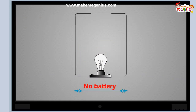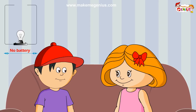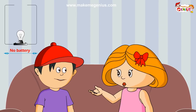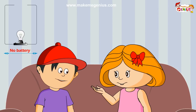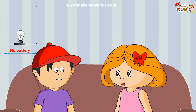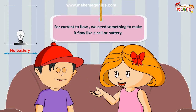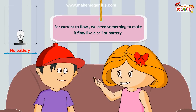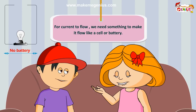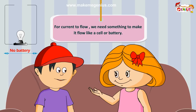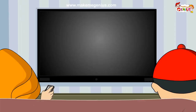Now look at this. There is no battery in this. If there is no battery, no electricity will flow. So the first condition for the flow of electricity in a circuit is that there should be something to make the electrons flow.